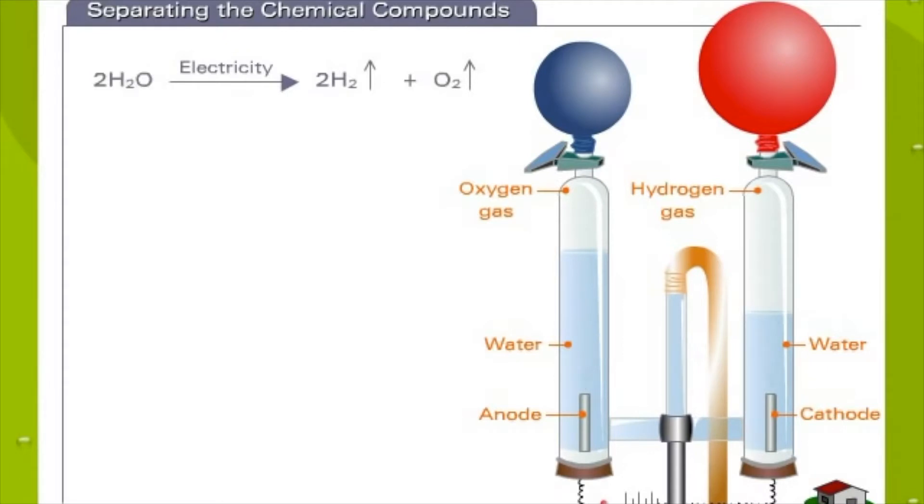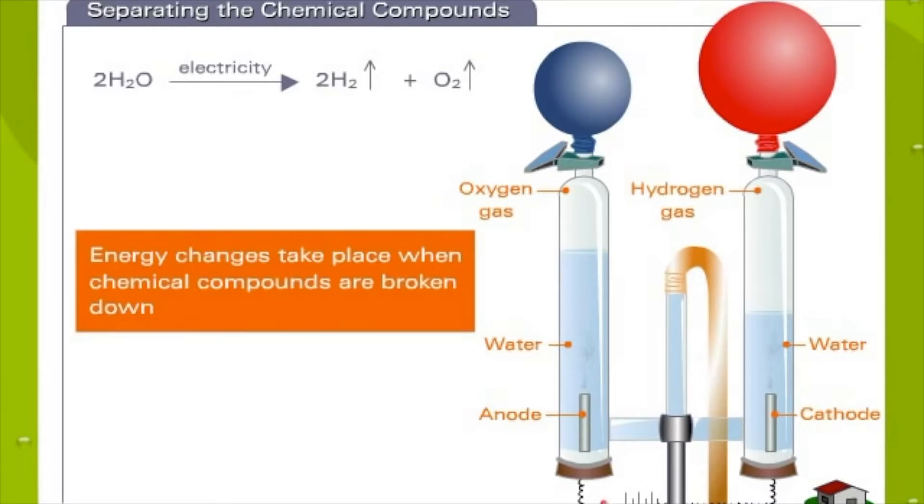Therefore, the red balloon fills up faster. Thus, when water is electrolyzed, oxygen gas is formed at the anode, while hydrogen gas is formed at the cathode. Energy changes take place when chemical compounds are broken down.